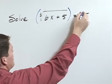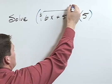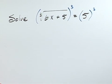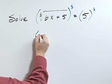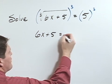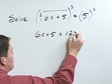The opposite of the cube root would be the cube, so I'm going to cube both sides of the equation. That means this left side is 6x plus 5, and the right side, 5 cubed, is 125.